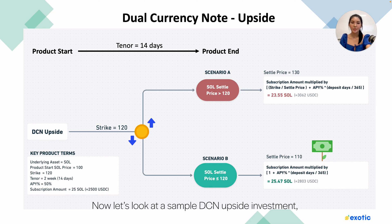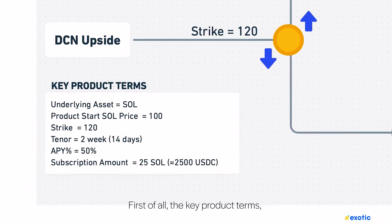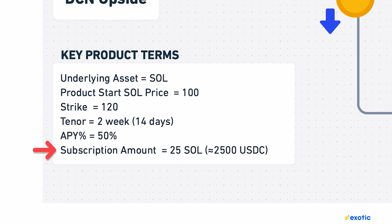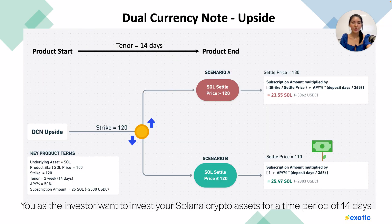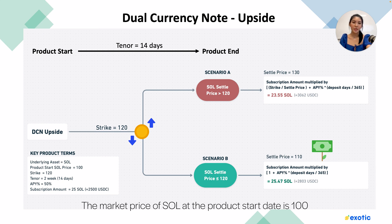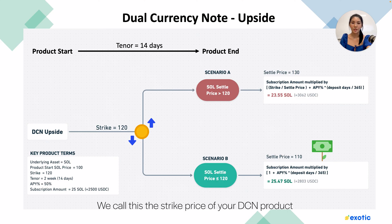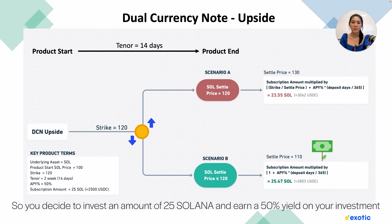Now let's look at a sample DCN upside investment. The underlying asset is Solana. The product start Solana price is 100, the strike is 120, tenor is two weeks, APY is 50%, and subscription amount is 25 Solana. You as the investor want to invest your Solana for 14 days. The market price of Solana at the product start date is 100, and your market view is that the price will not go beyond 120 in the next two weeks — this is the strike price. So you decide to invest 25 Solana and earn a 50% yield.